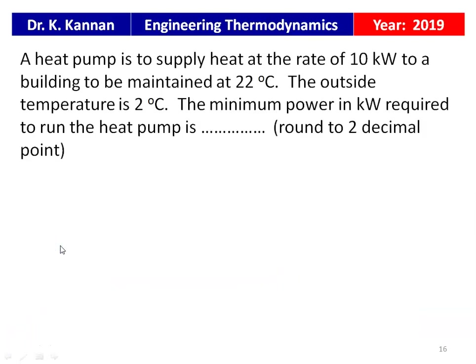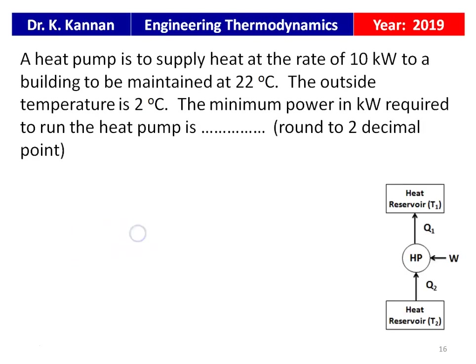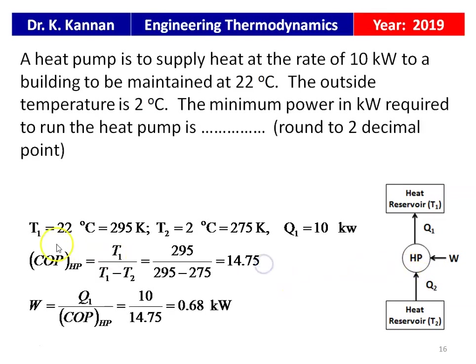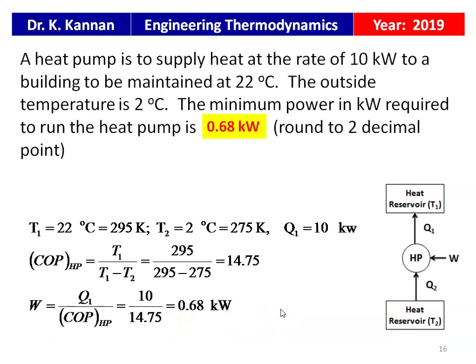From the 2019 question paper: a heat pump is to supply heat at a rate of 10 kW to a building maintained at 22°C. The outside temperature is 2°C. Find the minimum power in kilowatts required. Given: T1 = 22°C = 295 K, T2 = 2°C = 275 K, Q1 = 10 kW. COP = T1 / (T1 − T2) = 295 / (295 − 275) = 295 / 20 = 14.75. W = Q1 / COP = 10 / 14.75 = 0.68 kW.